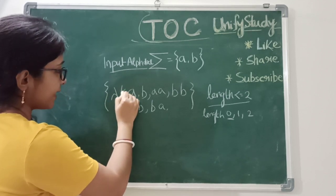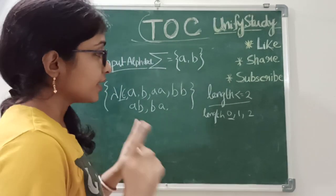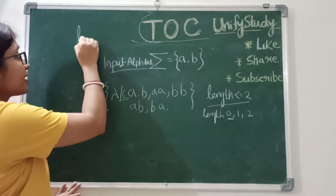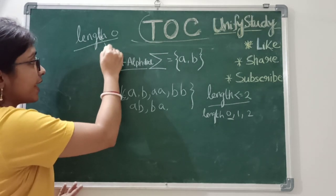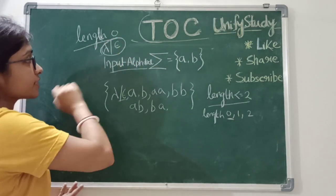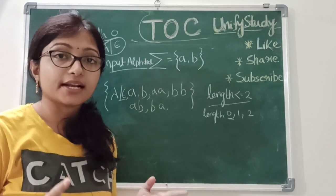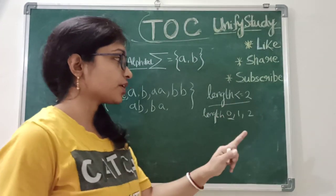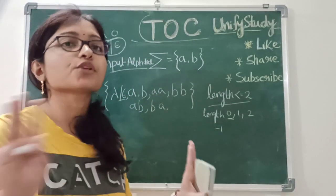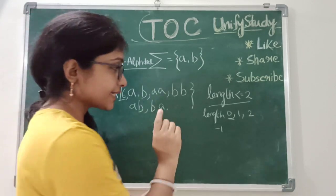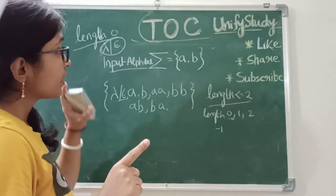Yes, there will be length zero as well. Length zero means what do we say? That is, we say lambda or epsilon. Whenever a string or language of length zero is accepted, it is called lambda or epsilon. Remember, this is very important: length zero means lambda or epsilon is accepted. Zero means lambda or epsilon — this is the first important symbol to remember in TOC.